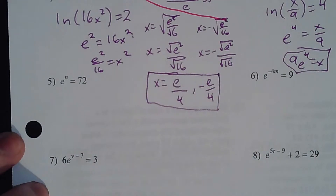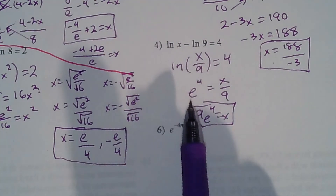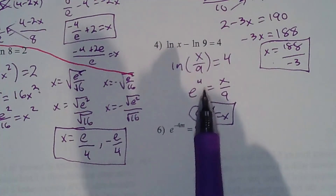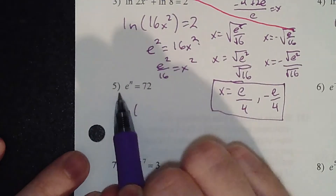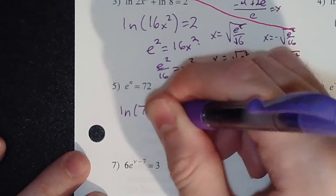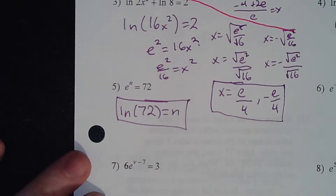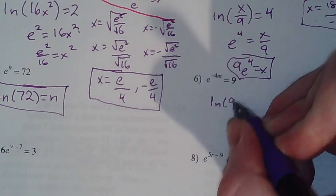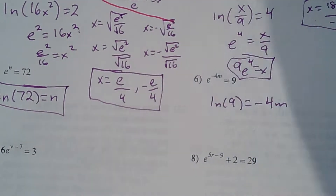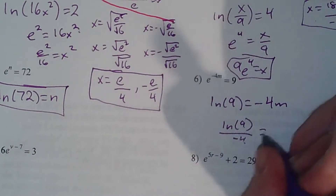Number 5 is the same exact idea except backwards. We want to use our log loop going backwards a step. E to the 4 is this value — that's a backwards log loop that's going to say the LN of this side is the exponent. The LN of 72 equals n. That's actually a one-step problem, nice and simple. Number 6 is super similar: the LN of 9 is equivalent to the exponent. Now divide both sides by negative 4, and you get LN of 9 divided by negative 4 equals m.